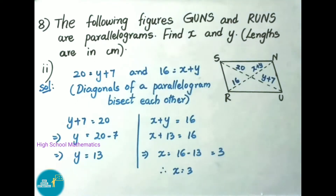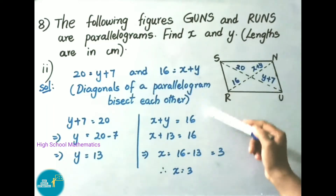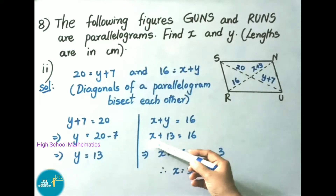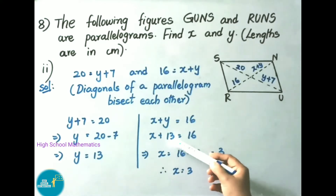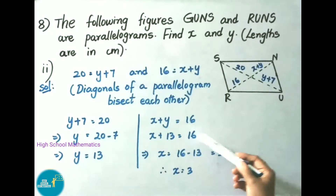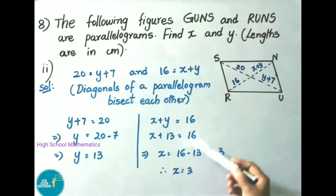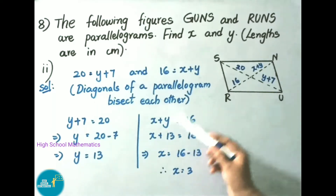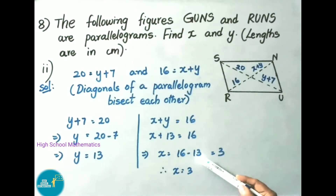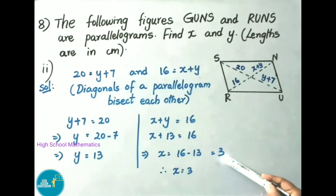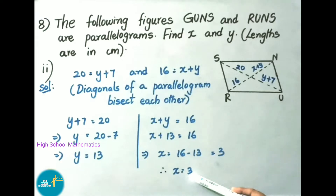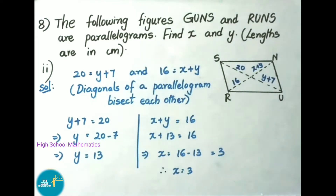Therefore y value is 13. Now the second equation: x plus y equals 16. Substituting y equals 13: x plus 13 equals 16, so x equals 16 minus 13, which is 3. Therefore x equals 3. Finally, x value is 3 and y value is 13.